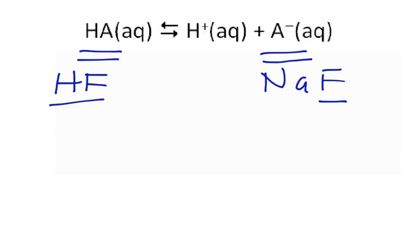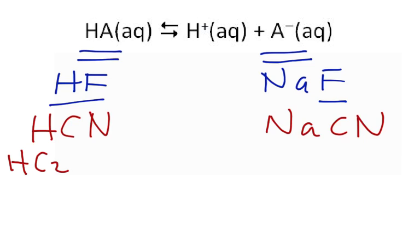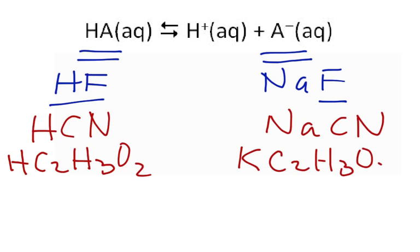If I were to do something like cyanide, I could do hydrogen cyanide, hydrocyanic acid, and I could have sodium cyanide. And if I made a solution with amounts of those two, that would be a nice buffer. A really common one would be acetic acid. And let's say we use potassium acetate. So again, the acetate ion is the conjugate base of my weak acid, acetic acid, and that would be a great buffer.